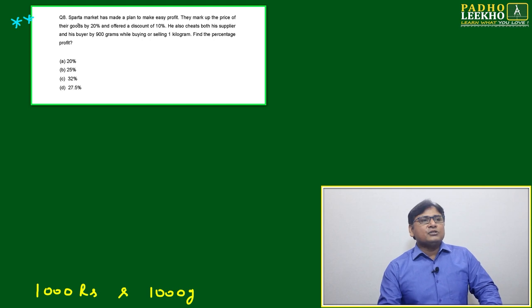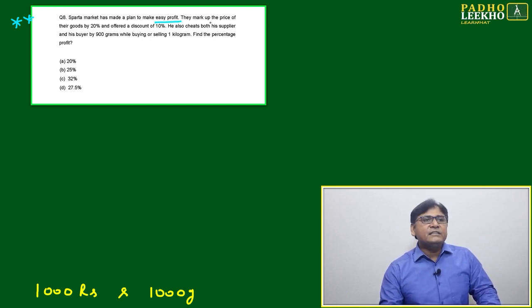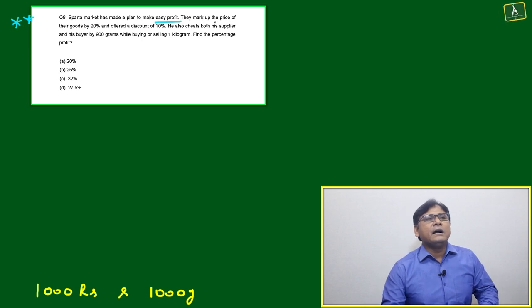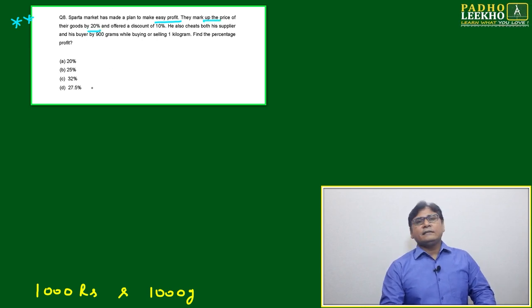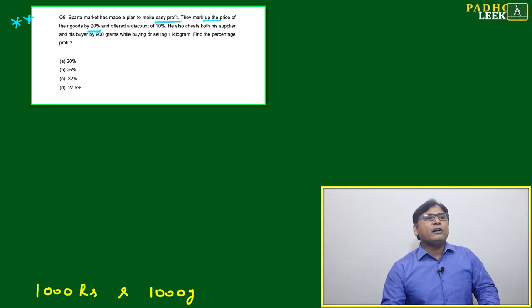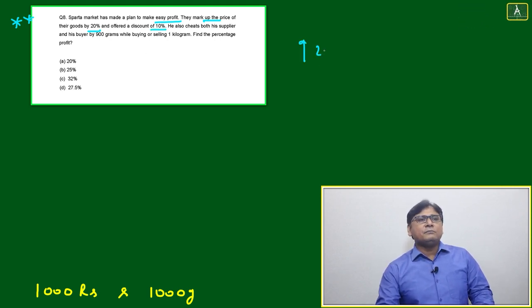Let's read: A shopkeeper has made a plan to make easy profit. They mark up the price of their goods by 20%, and then offer a discount of 10%. First they have marked up 20%, and then they offer 10% discount.